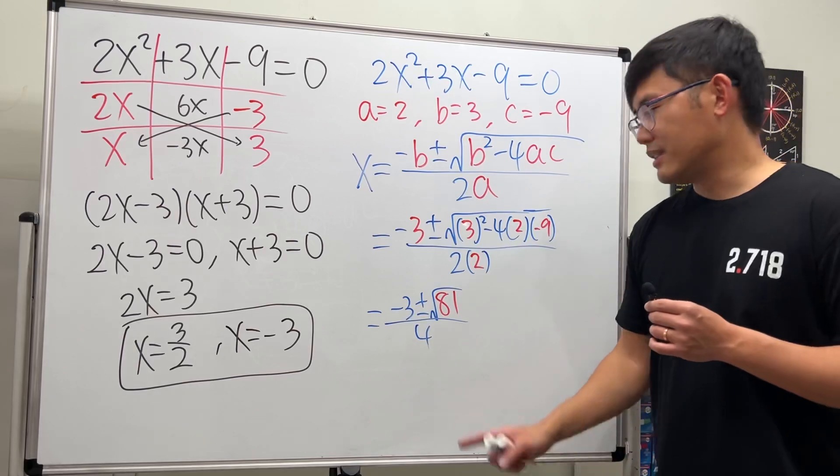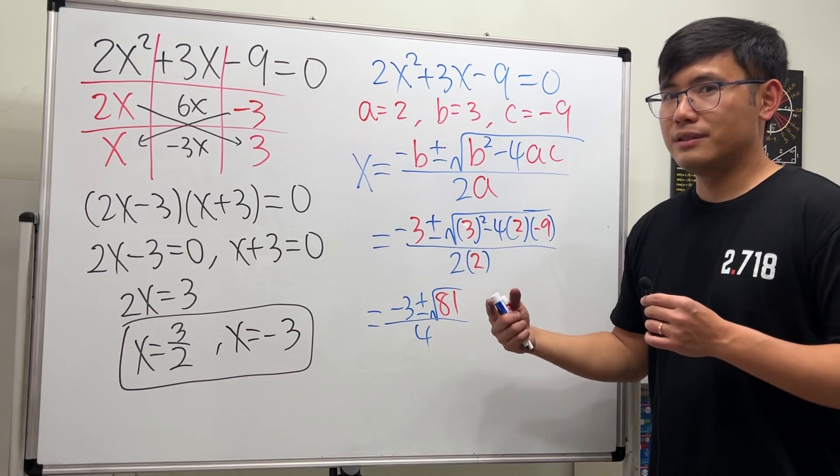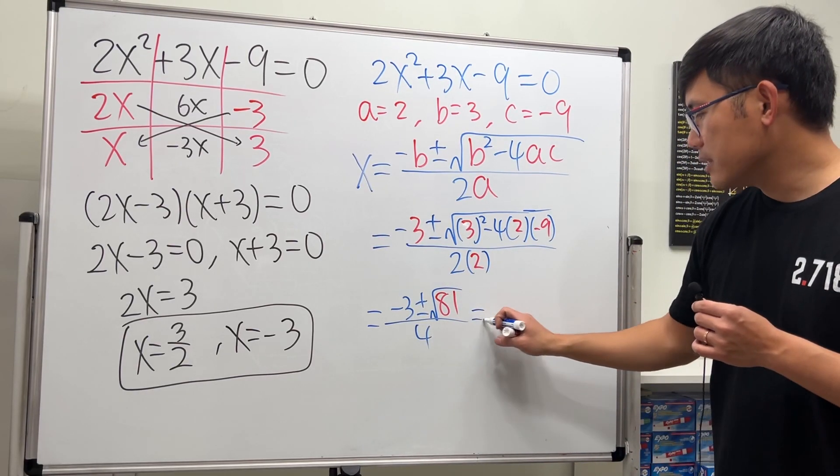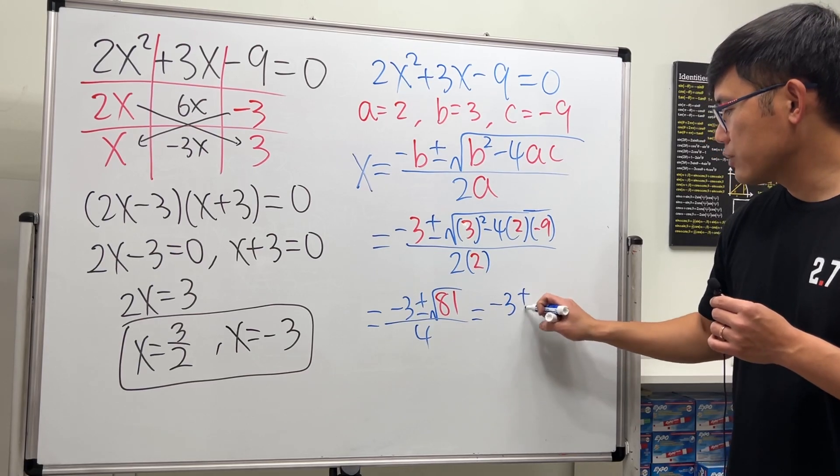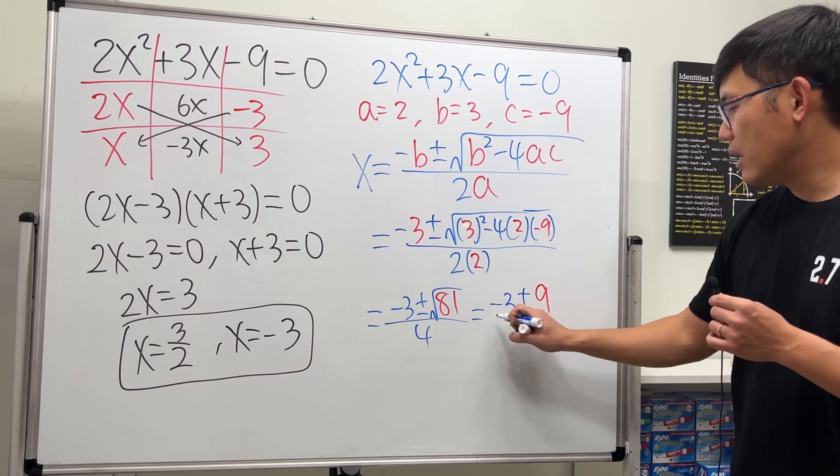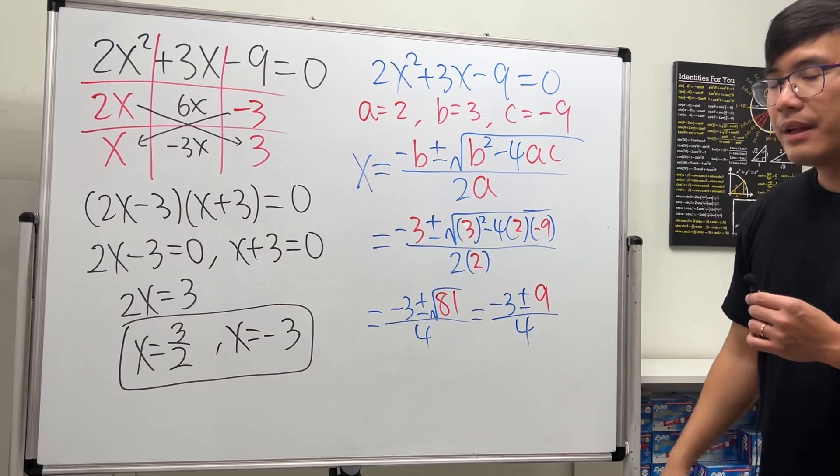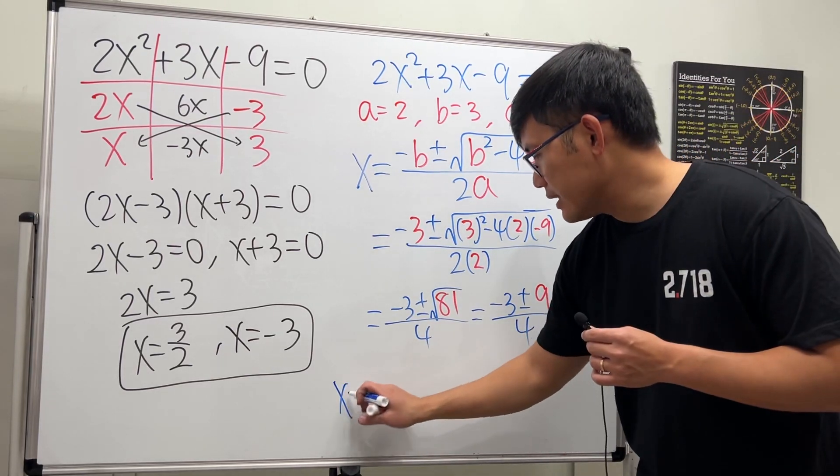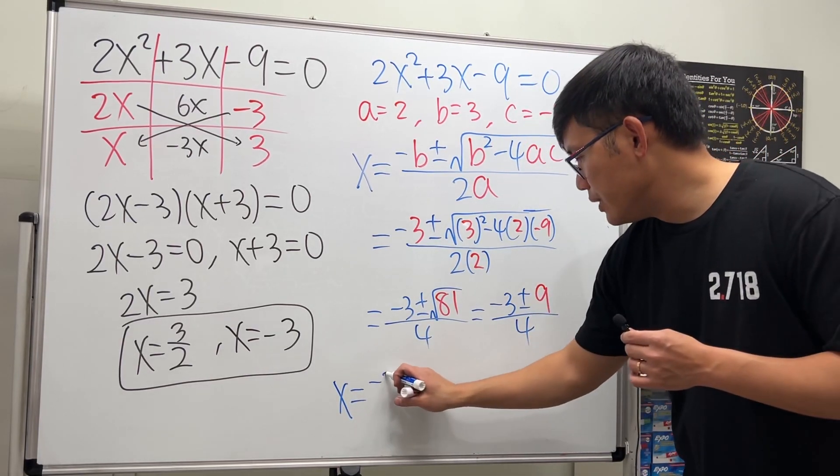Can we simplify this? Yes, square root of 81 is 9. So this right here means we have to do negative 3 plus or minus 9 over 4.